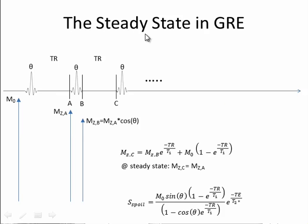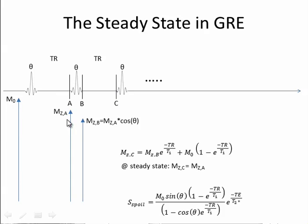Now, in gradient echo imaging, we only have one RF pulse. Usually the flip angle, which we call theta, is less than 90 degrees. Before the first pulse, we have M0. What I'm assuming between pulses is that the transverse magnetization completely decays away, so I'm only going to consider longitudinal magnetization. We consider Mz at point A.